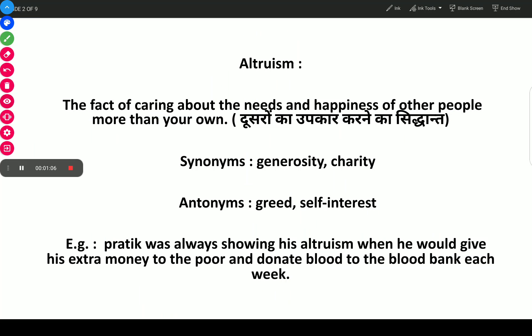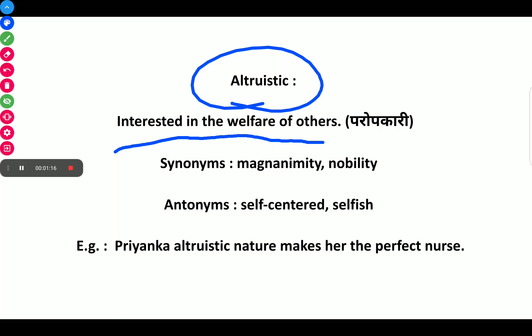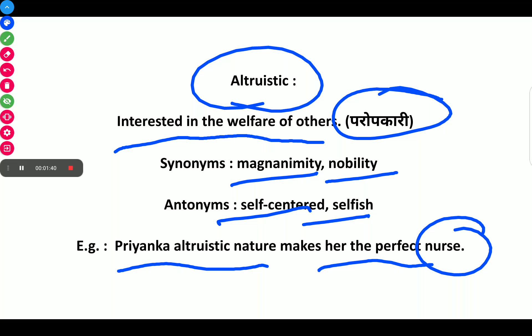The next word is Altruistic, which means being interested in the welfare of others. In Hindi it means Parukkari. Synonyms of Altruistic are magnanimity and nobility. The antonyms are self-centered and selfish. Example: Priyanka's altruistic method makes her the perfect nurse.